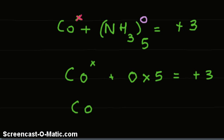So cobalt X equals +3, and that is the answer. The charge on cobalt equals +3, which is the oxidation state of cobalt.